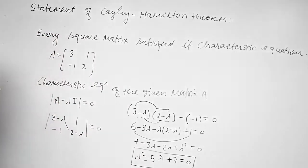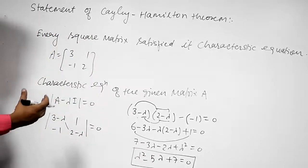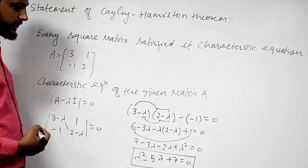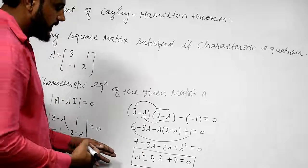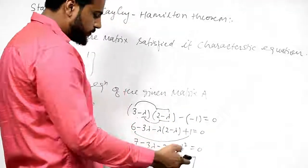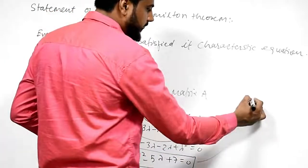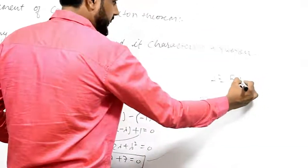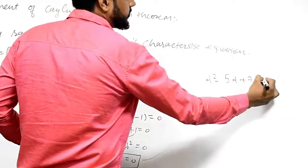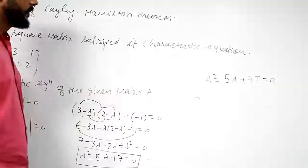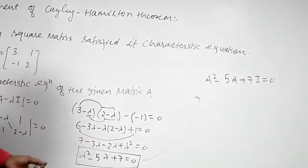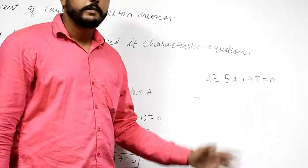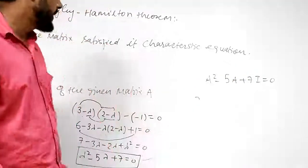By the Cayley-Hamilton theorem, every square matrix satisfies its characteristic equation. I will convert it into matrix form, so this becomes: A squared minus 5A plus 7I equals 0.